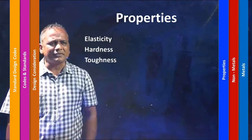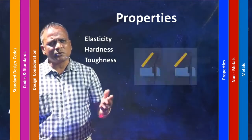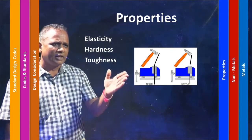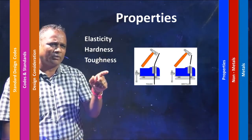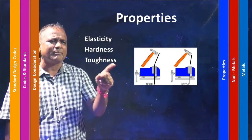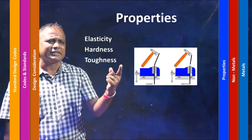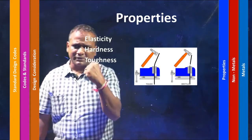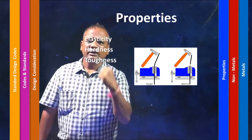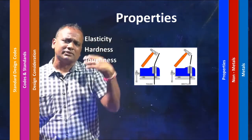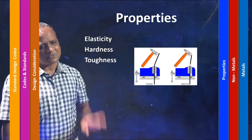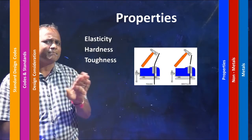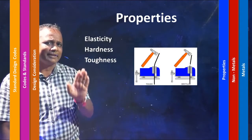Next would be toughness — repeatedly impacting over some material and it resists it. You can see a hammer repeatedly impacting a metal until the metal breaks. The ability to accept such blows or loads is related to toughness.